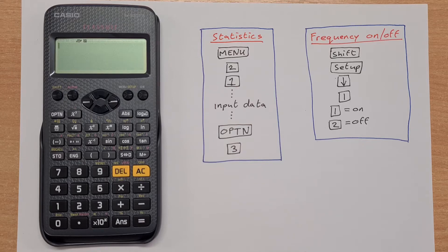In this video we're going to take a look at the statistics functions of the Casio FX 83 GTX and the same for the 85 GTX. They're pretty much the same calculator, just the 85 has a few more functions.